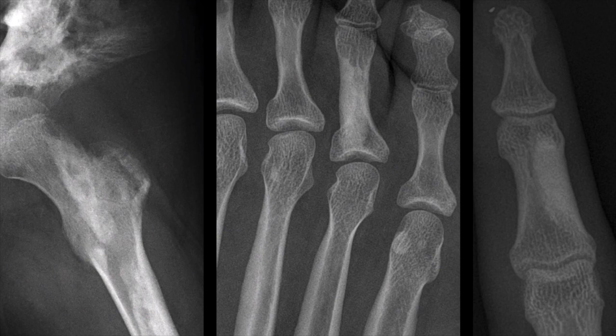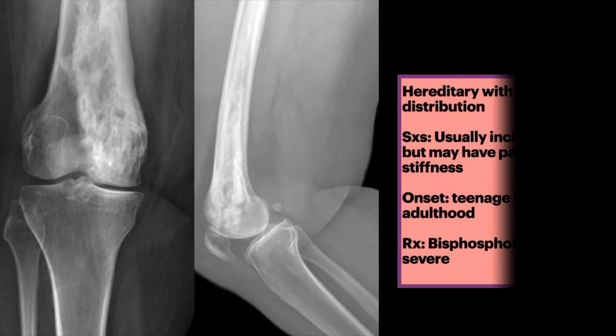Soft tissue masses are common. Pathology is non-hereditary with a sporadic distribution, and it is usually an incidental finding.